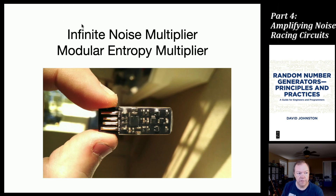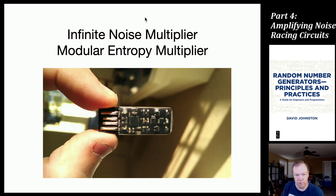The first one we're going to look at is called an infinite noise multiplier. It has also been called a modular entropy multiplier because its internal mathematical structure is equivalent to modular multiplication, which is a different type of algebra in mathematics. This thing here is a USB device you can buy and it implements an infinite noise multiplier.